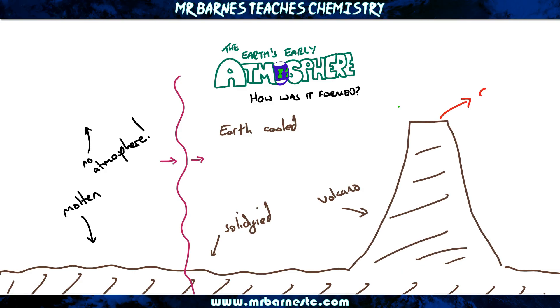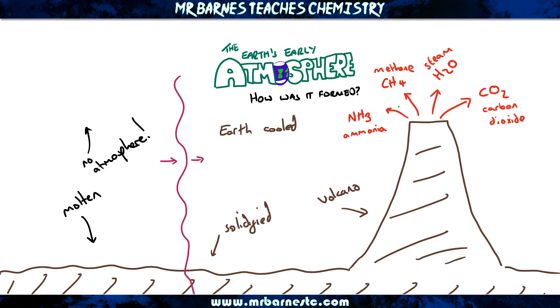Those volcanoes started to erupt and when they erupted, they gave out gases. The gases you need to know that were in the Earth's early atmosphere were carbon dioxide, water vapour, methane and ammonia.